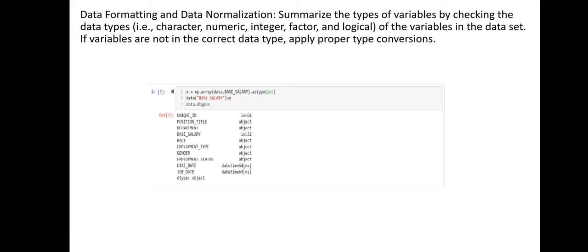The base salary column is initially of type float and we need to convert it to integer. We write np.array(data['base_salary']).astype(int) to perform this conversion. Once applied, printing data.dtypes confirms that the base salary data type has been changed successfully.